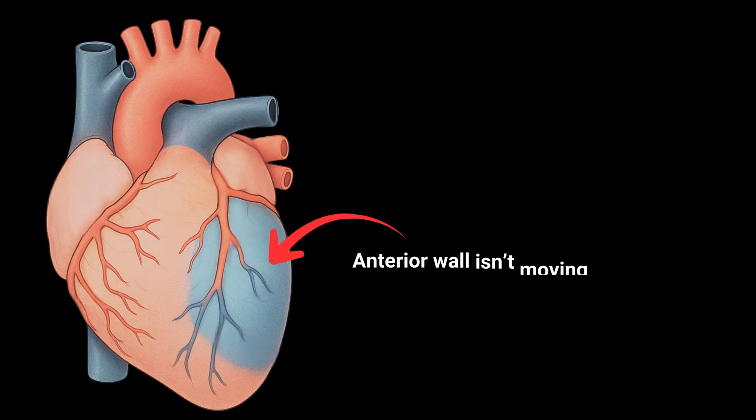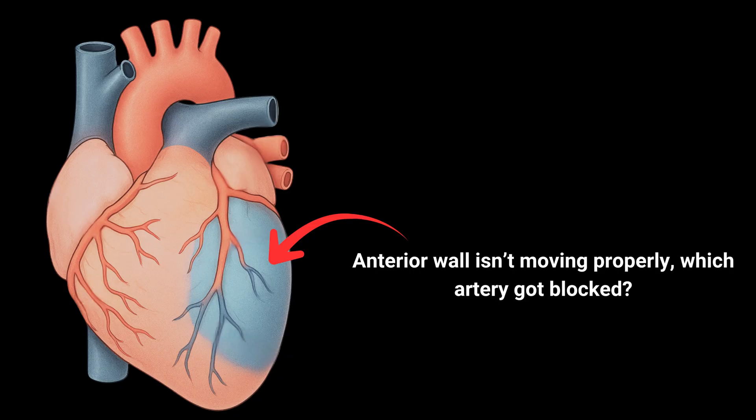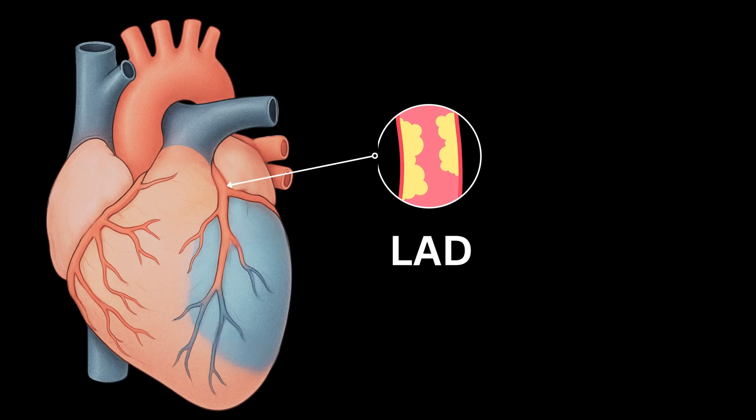Now here is a question for you. If the anterior wall isn't moving well on echo, which artery got blocked? Yes, of course, the LAD.